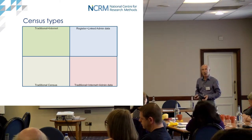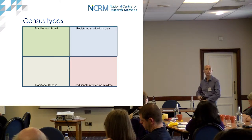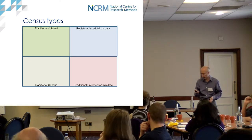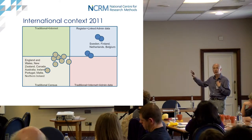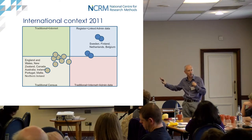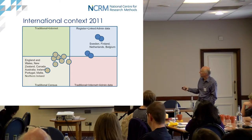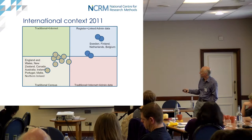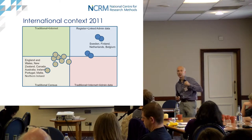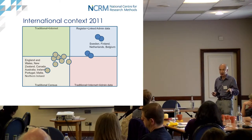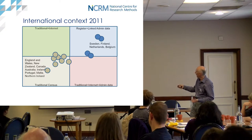Or we could do the all-singing all-dancing approach: keep a list of people, get an online survey to fill in tricky characteristics, and do the rest with admin data - a beautiful linked system up in the top-right corner. In 2011 we see a whole host of censuses effectively doing something really traditional but edging up into putting forms online and playing a little bit with checking against administrative records.